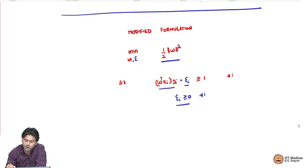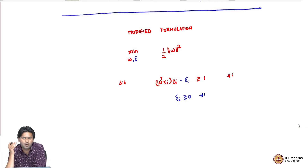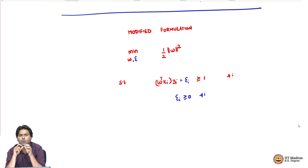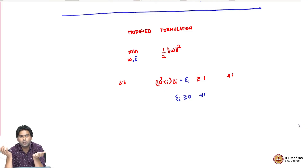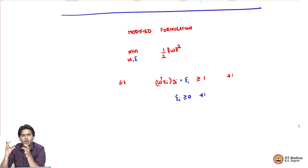What is going wrong is that we allowed points to pay bribes but we did not penalize these bribes. We do not want points to pay bribe as much as possible — if points are paying bribe, they should pay a cost. In the current formulation there is no penalty for paying bribe, so every point will just pay bribe and get its job done. We have to penalize the bribes; we want to pay as little bribe as possible while still satisfying the constraint. We can only introduce this penalty in the objective.